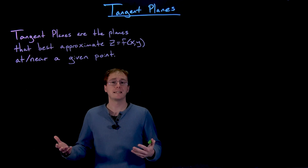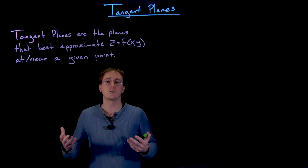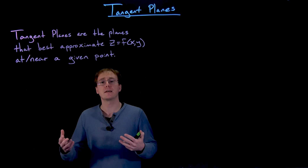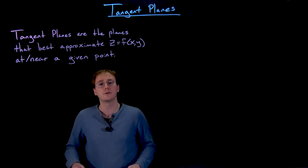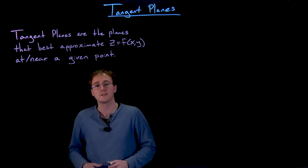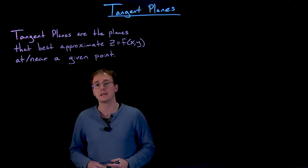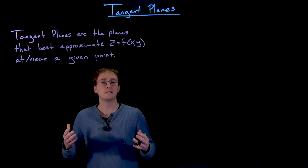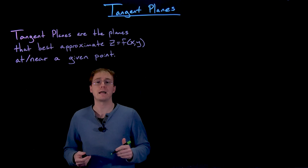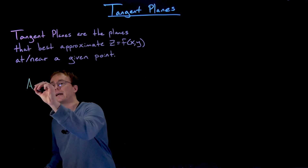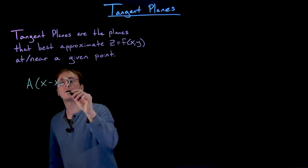So now we have a rough idea of what tangent planes are. They're just planes that best approximate our surface at a given point and play many of the same roles that tangent lines did for single-variable functions. The next question is: how do we find the equation of a tangent plane? We already know what the equation of a general plane looks like from our earlier work with vectors.